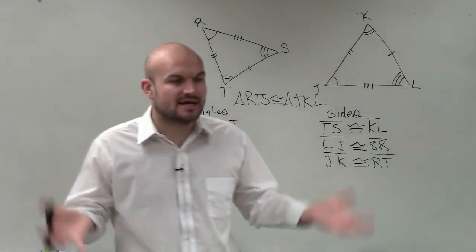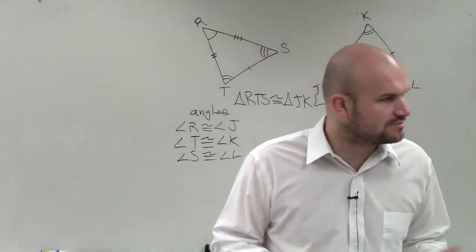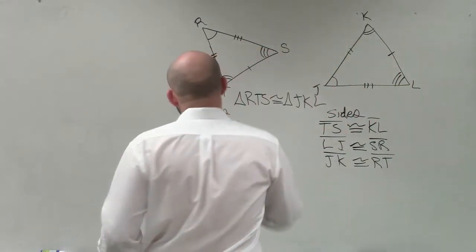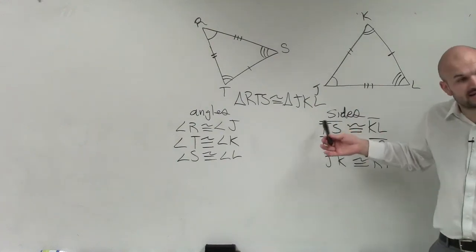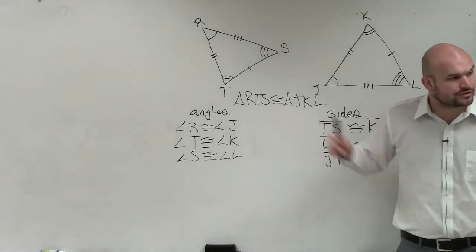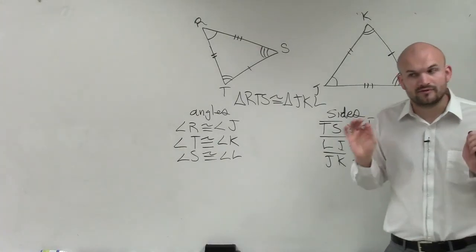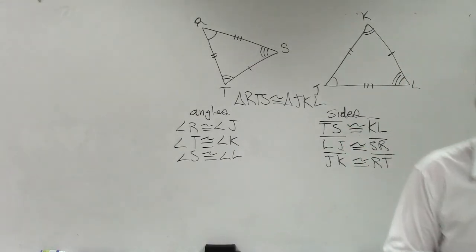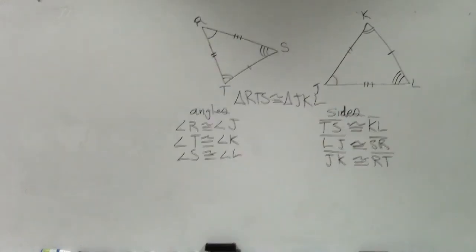All right, make sure, again guys, you label everything with corresponding parts. And if you're talking about an angle, use the angle symbol. If you're talking about a side, use the lines. And if you're talking about a triangle, make sure you draw the triangle symbol, all right? Very small little things that we've got to make sure we're on the same page with. All right, so did everybody write down the correct answer?